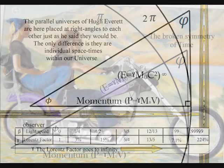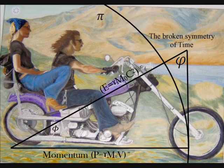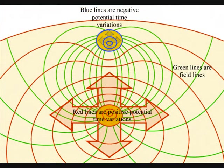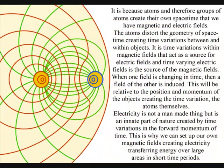In quantum atom theory, it is because the atoms can distort the geometry of space-time, that we have electromagnetic fields. It is time variations within magnetic fields, that act as a source for electric fields. And time varying electric fields, is the source of the magnetic fields.